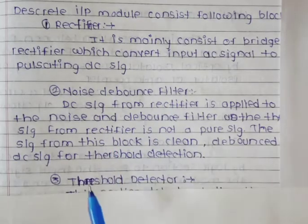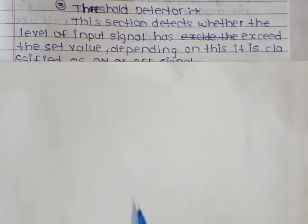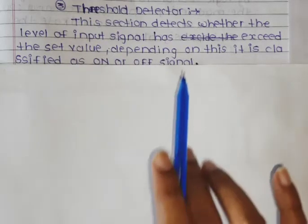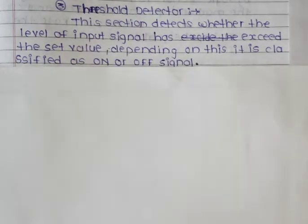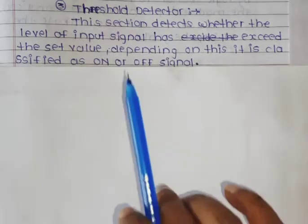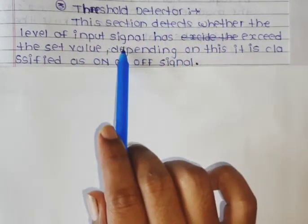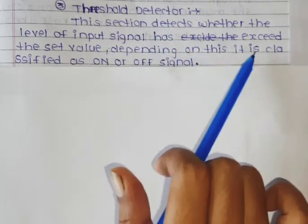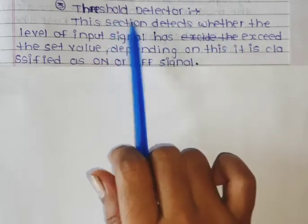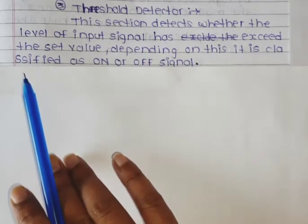After that, see the threshold detector. This section detects whether the level of the input signal has exceeded the set value. Depending on this, it is classified as an on or off signal. The threshold detector detects whether the input signal level has exceeded the set point, and determines if the signal is on or off.